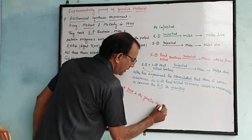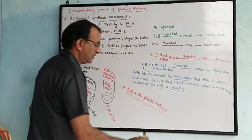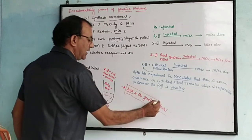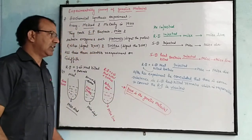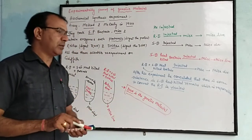After this experiment, Avery, Macleod, and McCarty proposed that DNA — and only DNA — is the genetic material. In the next part, we will discuss the Alfred Hershey and Martha Chase experiment.